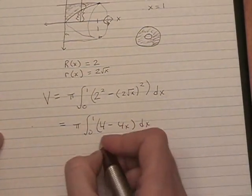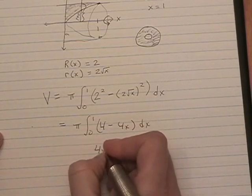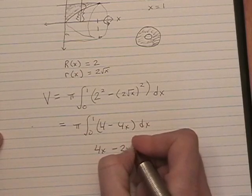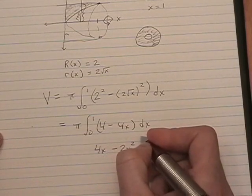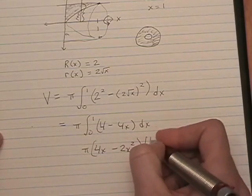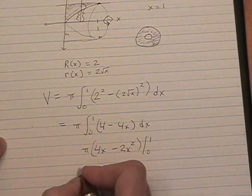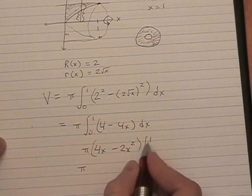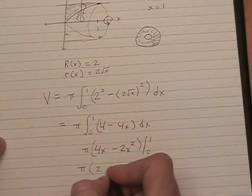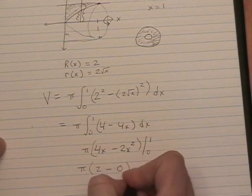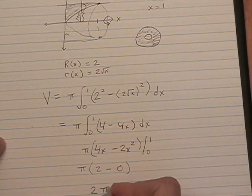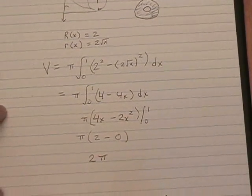Anti-derivative of 4 is 4x. Anti-derivative of 4x is 2x squared. We are going to evaluate that, and it's times pi, remember, between 0 and 1. Okay, when you put 1 in, you get 4 minus 2, which is 2. And when you put 0 in, you get 0. So our final value for the volume is 2 pi.